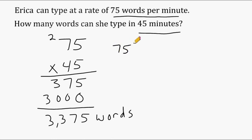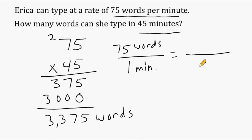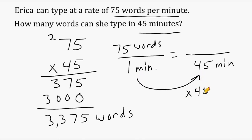This was a unit rate problem — Erica types 75 words per minute and we used that rate to find how many words in 45 minutes. If we set up two equivalent rates as a proportion, the number of minutes got 45 times bigger, which means the number of words also got 45 times bigger, giving 3,375. Although with this problem we didn't need a proportion — we could read it and understand it's a simple multiplication problem. That covers some basic word problems involving unit rates. Don't forget to subscribe to my channel for hundreds of math videos that can help with your math homework.